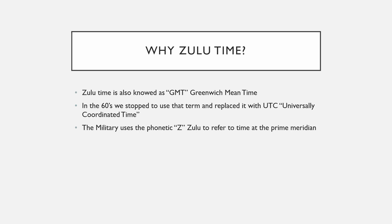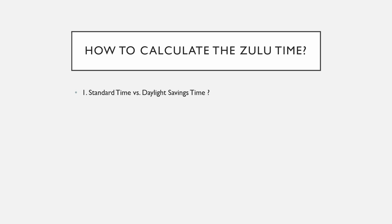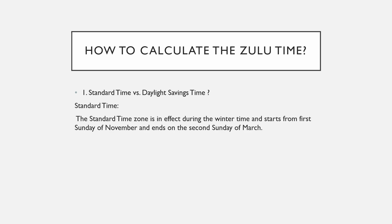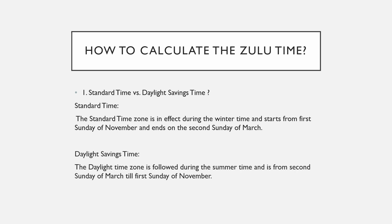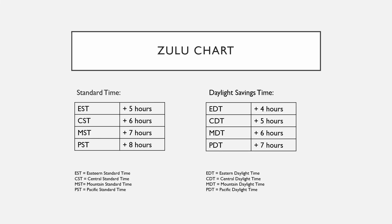Now let's learn how to calculate using the Zulu chart. The first step is to recognize if we are in standard time or daylight saving time. Standard time occurs during winter, starting from the first Sunday of November and ending on the second Sunday of March. Daylight saving time is followed during summer, from the second Sunday of March to the first Sunday of November.